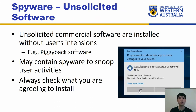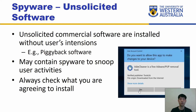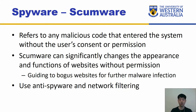Unsolicited commercial softwares are installed without users' intentions — you didn't even get an opportunity to say yes or no, and it just got installed anyway. They may contain spyware to snoop on users' activities, like keyloggers. It's always a good idea to check what you are agreeing to install at all stages. A more specialized area is scumware, which refers to any malicious code that enters the system without the user's consent or permission — you didn't try to install anything, but it got installed anyway.